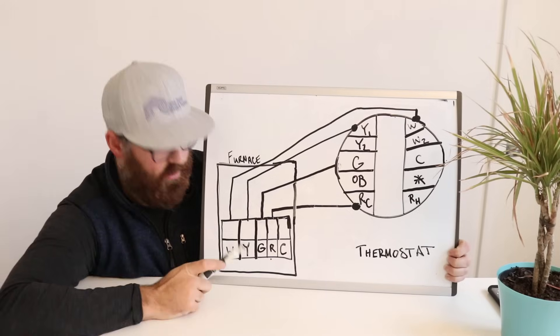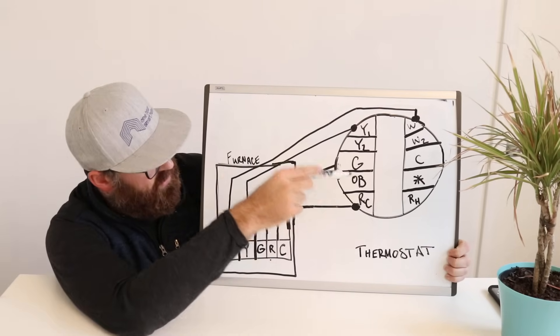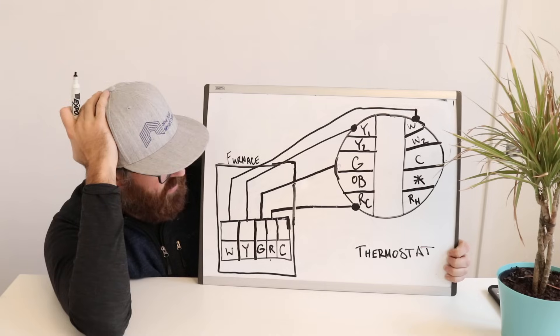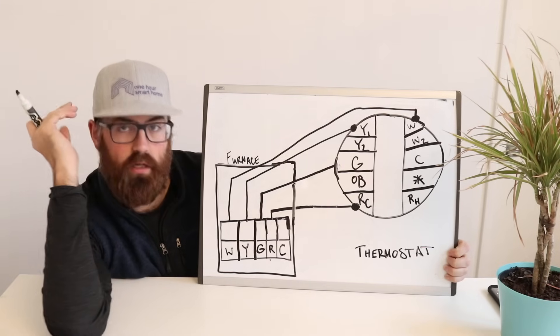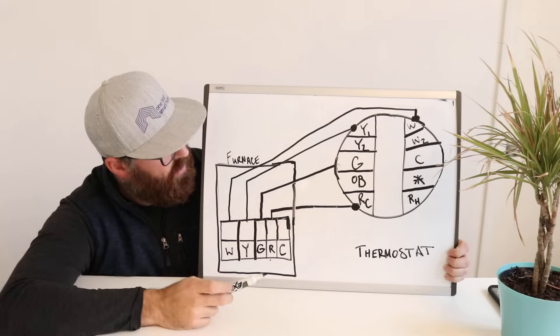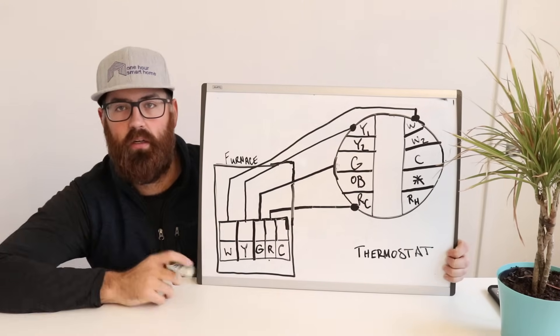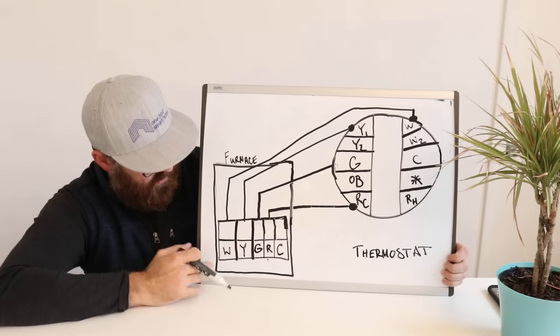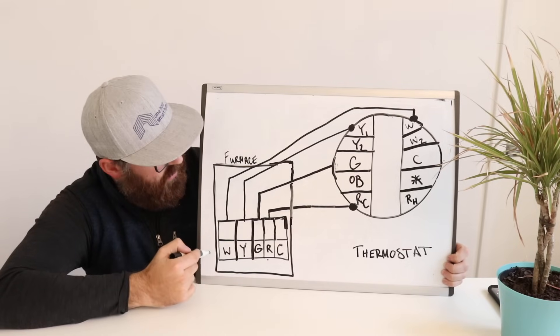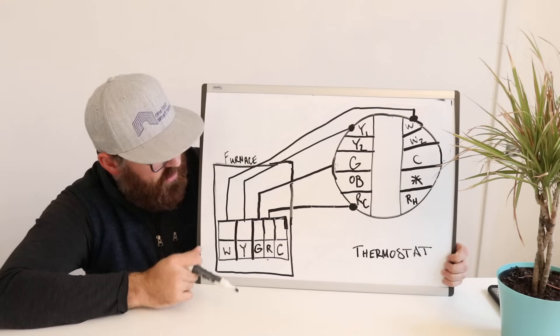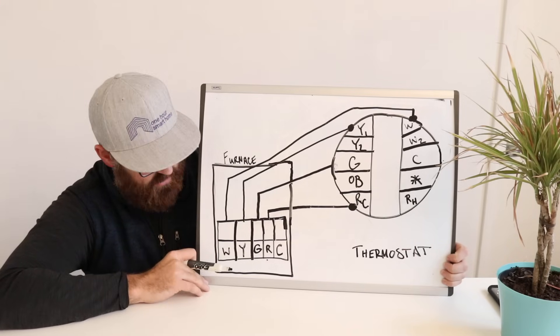If you've got a heat pump, very similar, you're just going to use this OB terminal here for the heat pump reversing valve. But, in general, this is what your wiring looks like for 95% of people. And if you've got a Y-2 wire or a W-2 wire, that just means that you have two-stage heating and cooling. There's a little Y down here and a little W-2 down here in your furnace, and that connects to your thermostat.